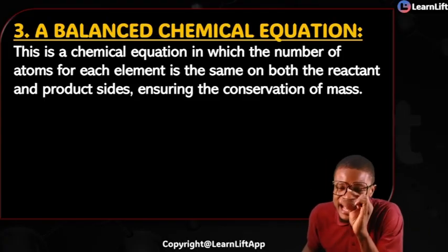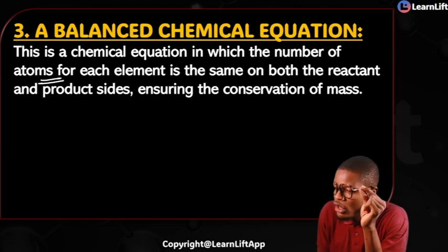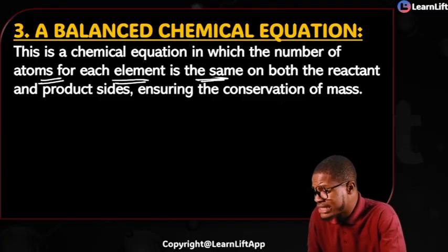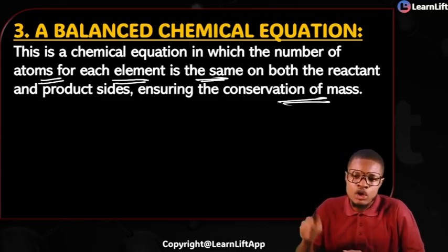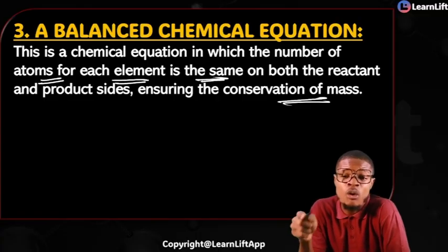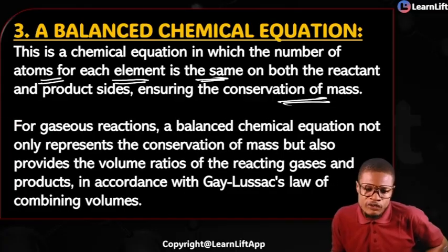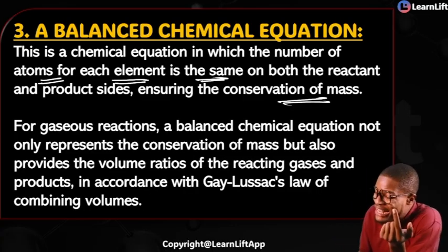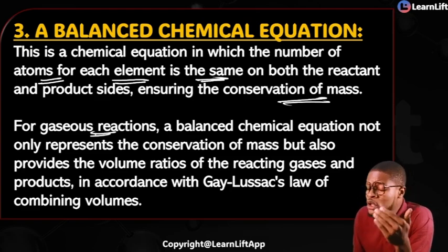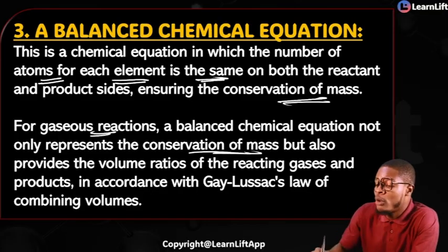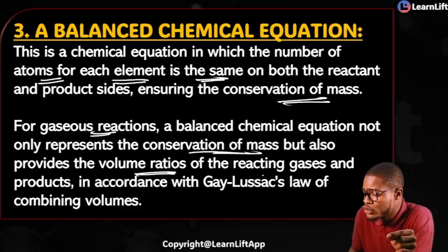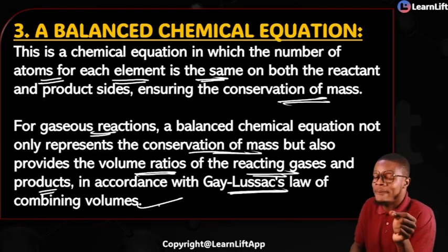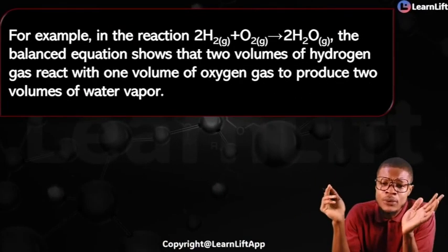The third concept is the balanced chemical equation, also called the stoichiometric equation. This is a chemical equation in which the number of atoms for each element is the same on both the reactant and product sides, ensuring conservation of mass. For gaseous reactions, a balanced chemical equation not only represents conservation of mass — it also provides information about the volume ratios of the reacting gases and products, ensuring they are in line with Gay-Lussac's Law of Combining Volumes.